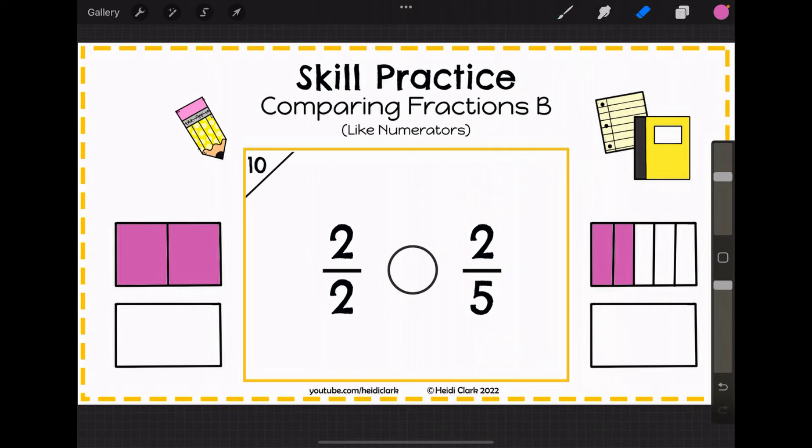2 halves is definitely bigger, because you only had to split it into 2 when you got both of them. 2 halves is also equal to 1 whole.